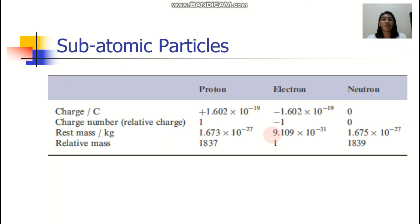Here are the properties of our subatomic particles. The charge proton is positive. Electron is negative. Neutrons are, they don't have a charge. The charge number or the relative charge are 1 for proton, negative 1 for electron, and then 0 in neutron. These are the values for the rest mass and their relative mass.